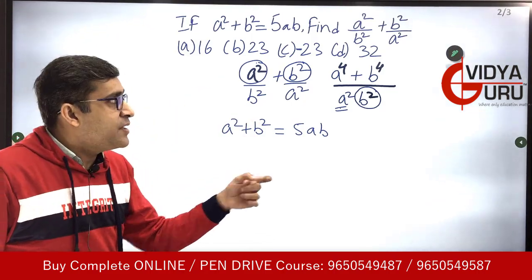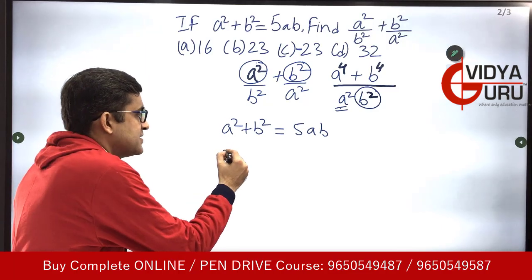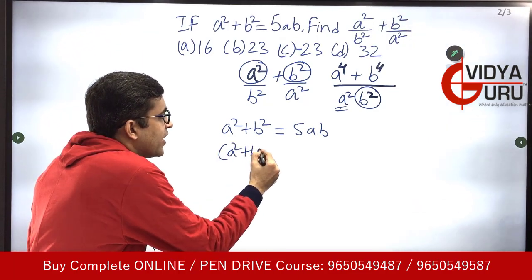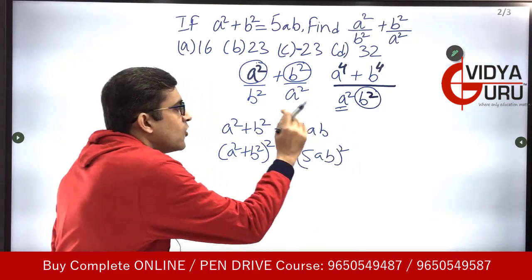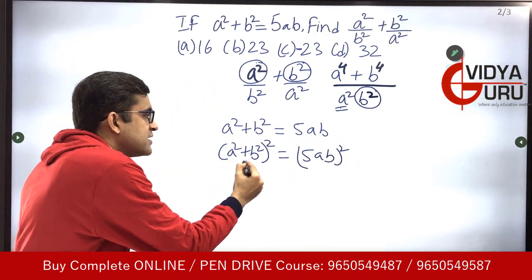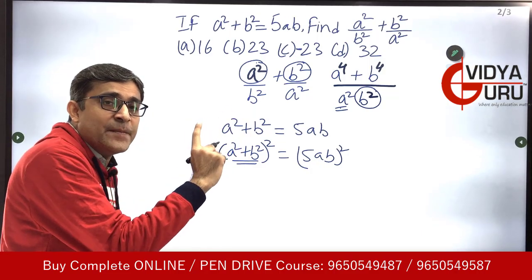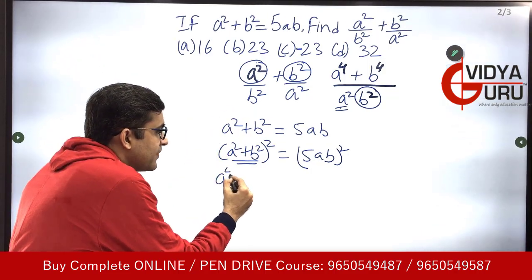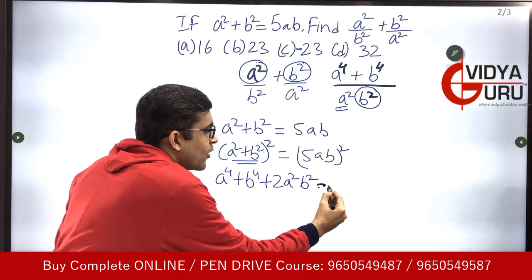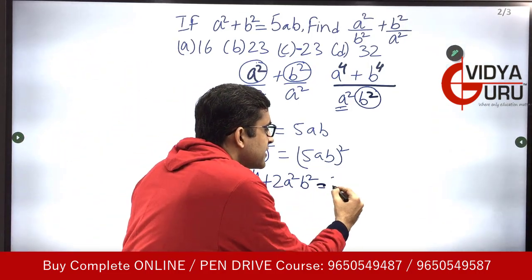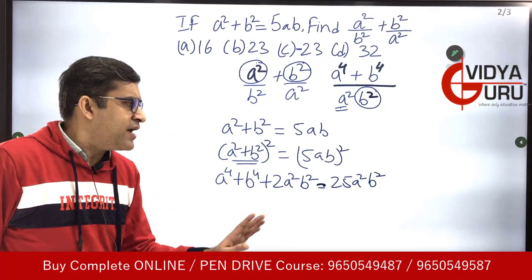By squaring both sides, we get (a² + b²)² on the left. Expanding using the identity (a + b)² = a² + b² + 2ab, it becomes a⁴ + b⁴ + 2a²b². On the right hand side, squaring 5ab gives us 25a²b².